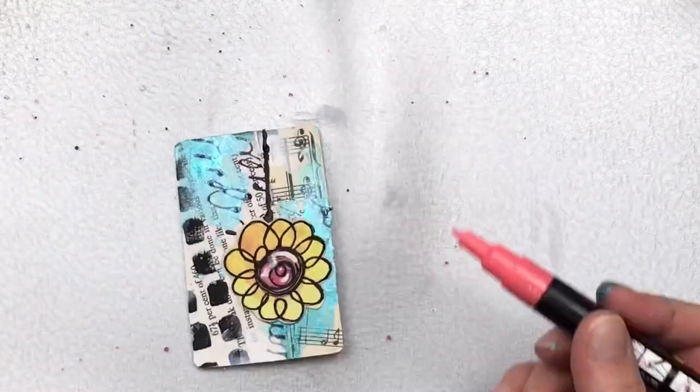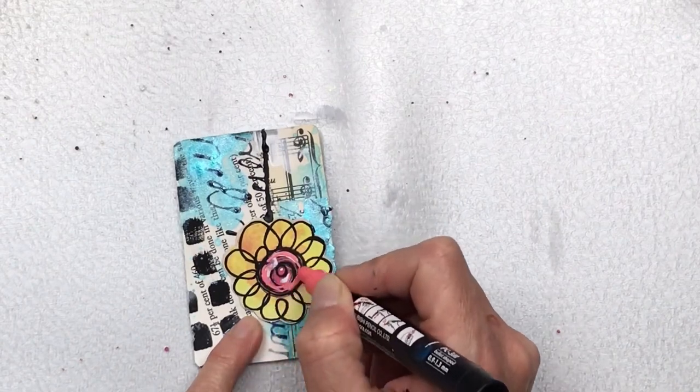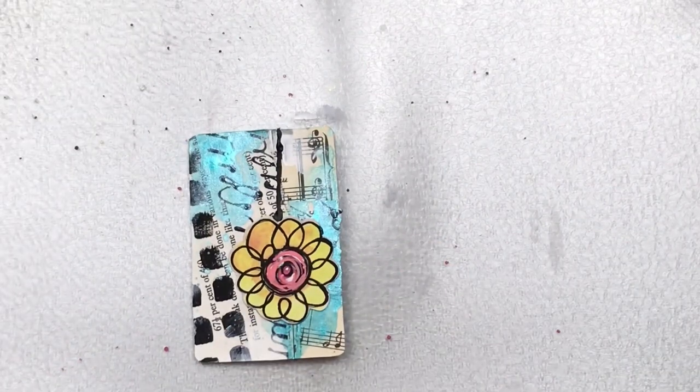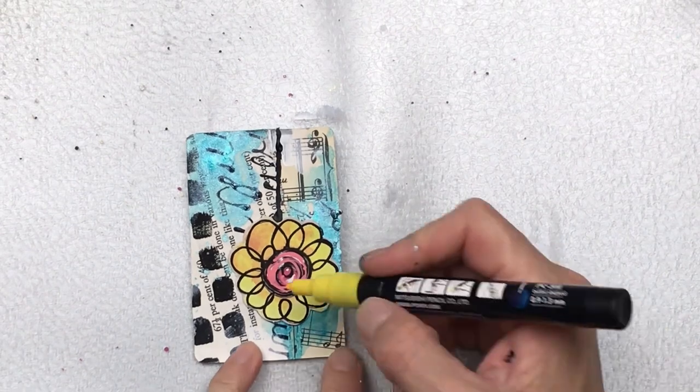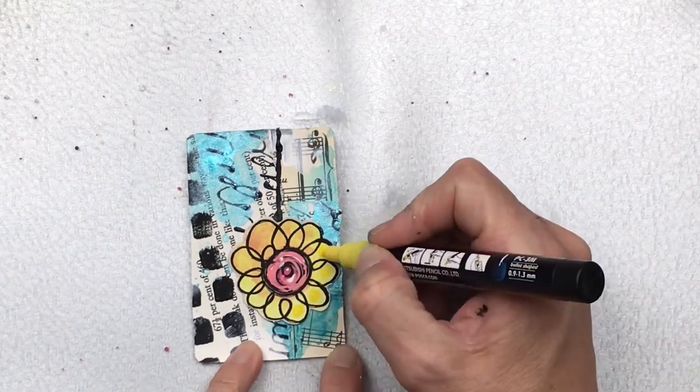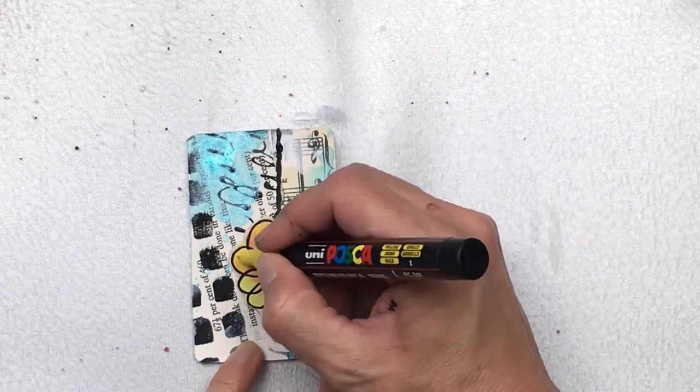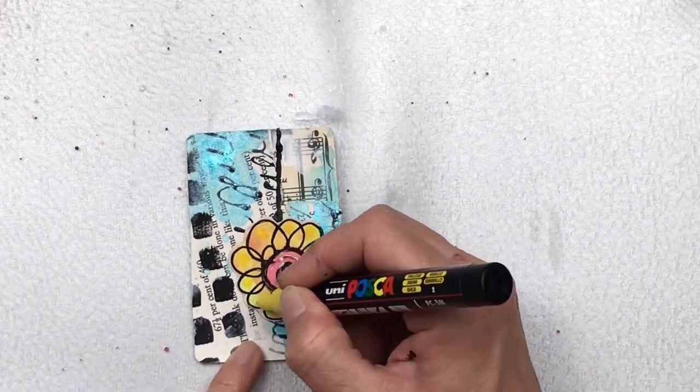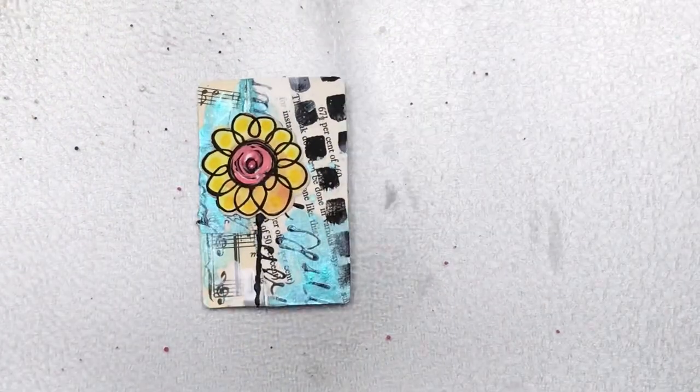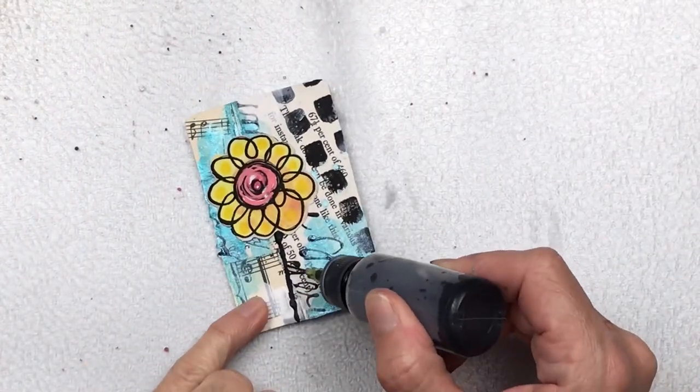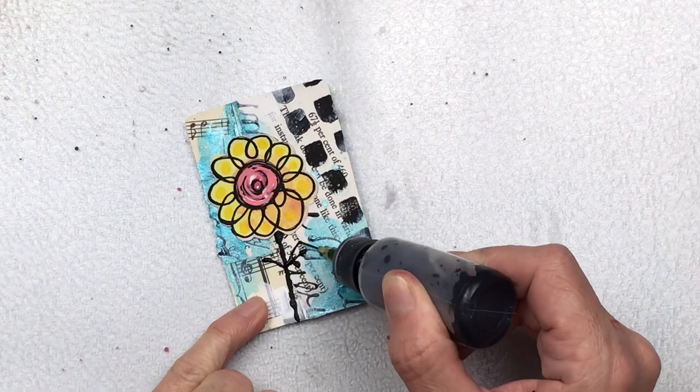I'm going to add some additional highlights on the flower. I'm using a coral colored Posca pen to make the center more bright. I like that color and I want it to pop. Then I'm also using a yellow one to add a few little dots to brighten the yellow a little bit more. I want my focal point to really stand out. I'm using the applicator bottle again to create some simple leaves on my flower.